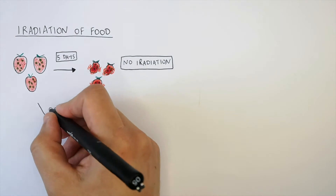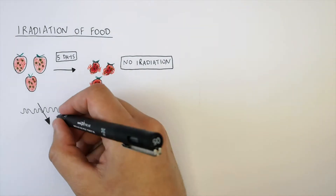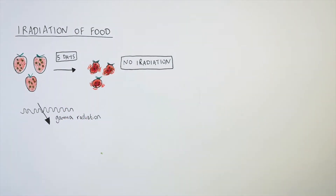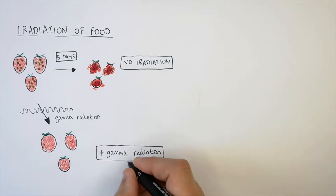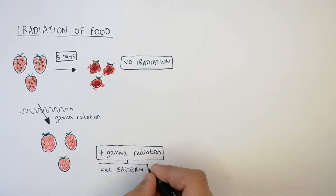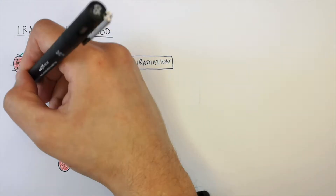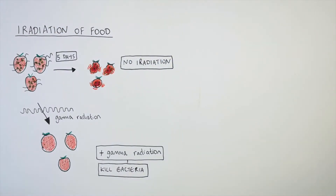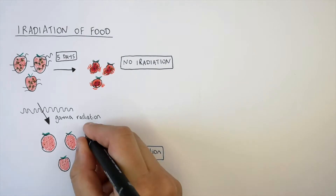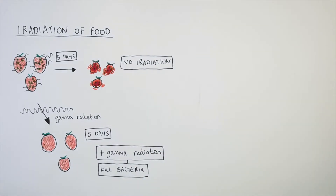However, in this example, if you use gamma radiation to irradiate the food, you're going to kill the bacteria. Gamma radiation is going to kill the bacteria without damaging the food. So five days later, you're more likely to have fruit that is not decomposed by the bacteria. This is because the gamma rays will kill the bacteria on the fruit.